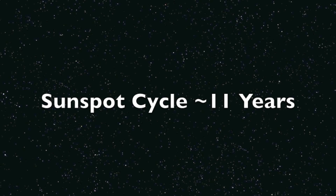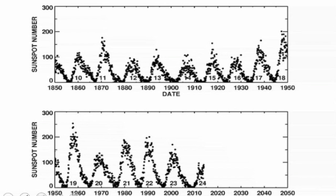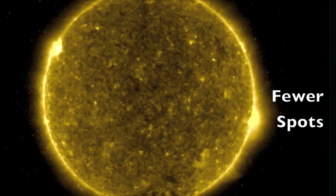The most commonly discussed cycle of the Sun is the sunspot cycle. NASA's official sunspot numbers show an approximately 11-year cycle of high and low sunspot activity. The high activity periods are called sunspot maximum, or just solar maximum, while the periods of low sunspot activity are called sunspot minimum, or just solar minimum.